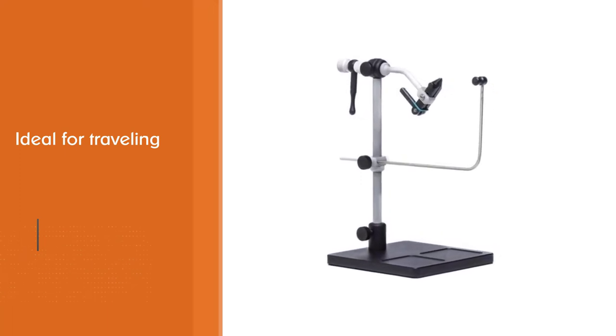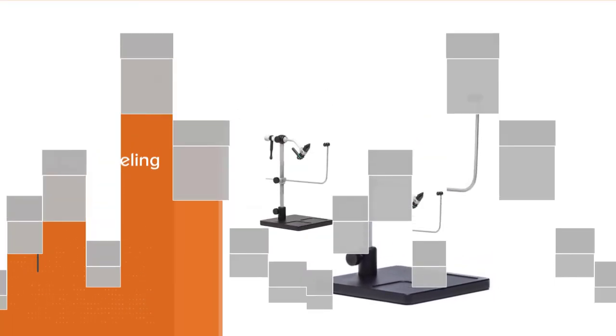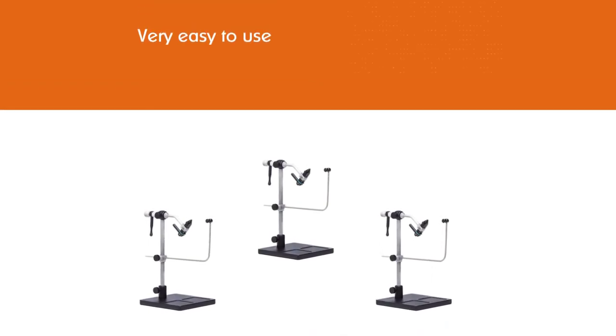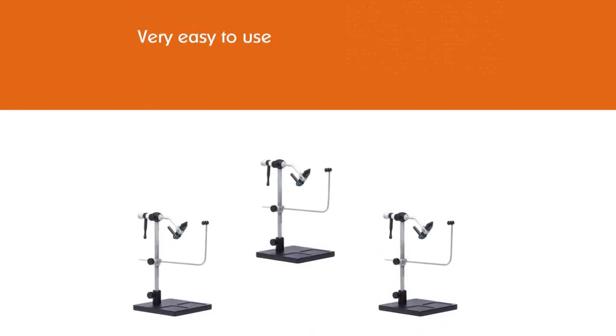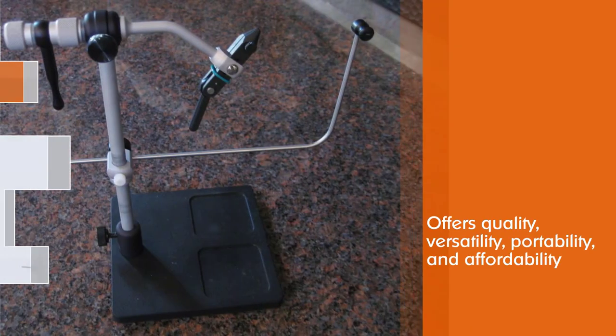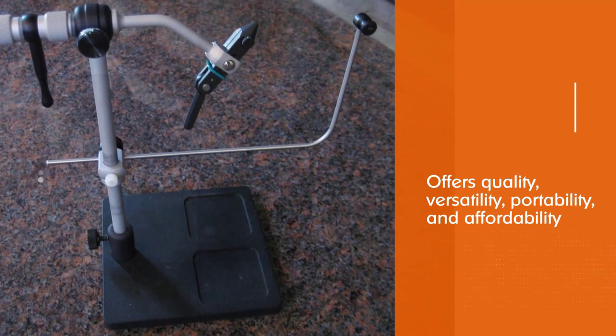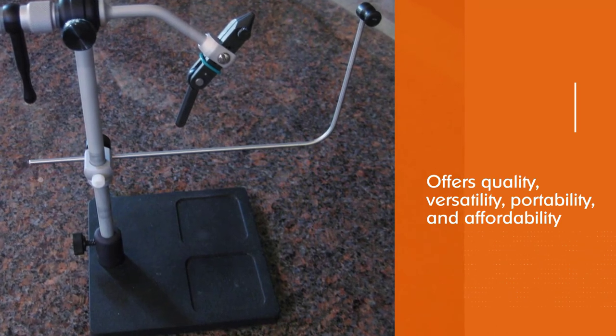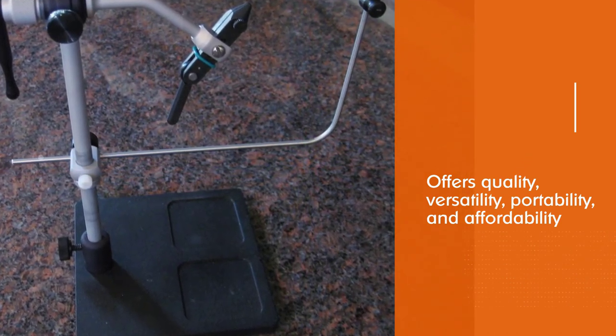This vice offers quality, versatility, portability, and affordability. Standard features for the Traveler 2200 Cam Series vice are an adjustable bobbin cradle, case-hardened cam jaws, rotary tension screw, a black powder-coated base with a seven-inch stem.